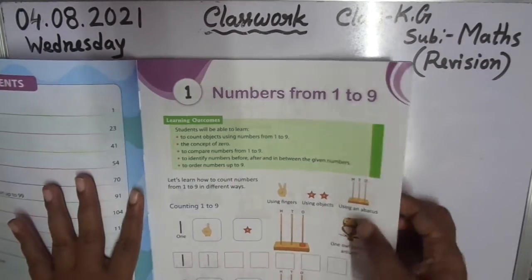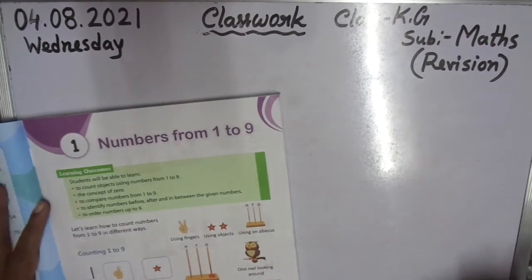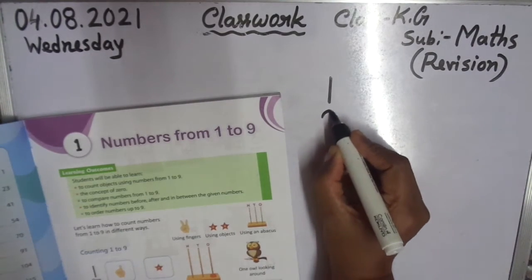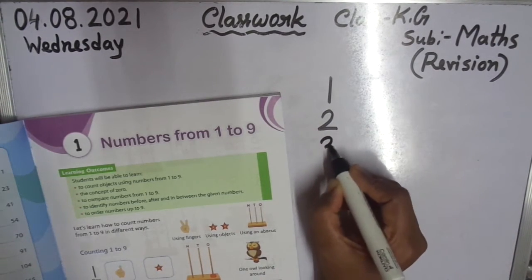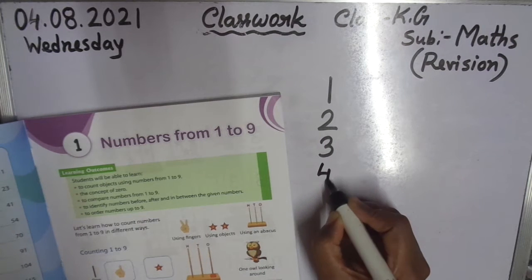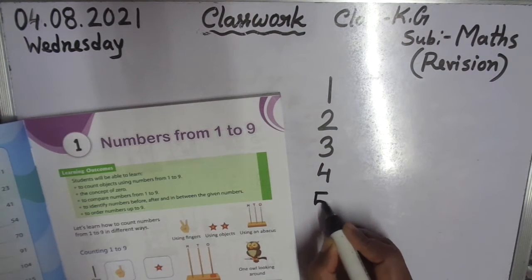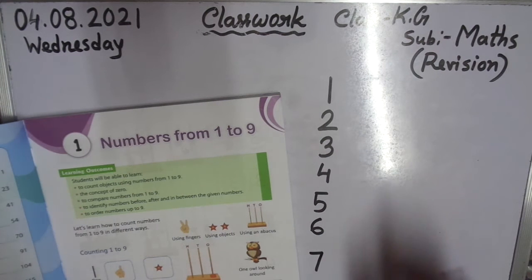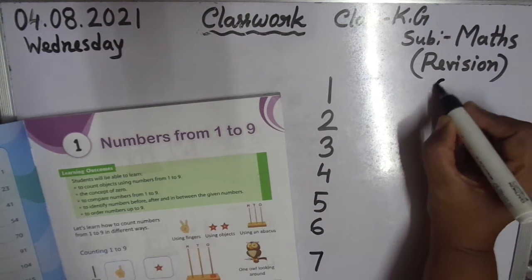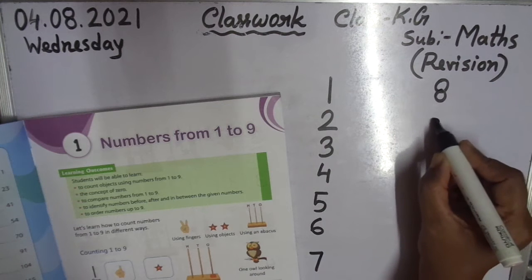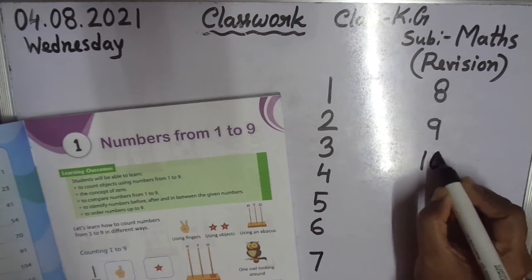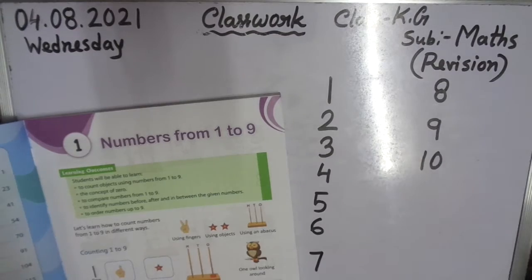You practice first numbers. Means 1, 2, 3, 4, 5, 6, 7, 8, 9, 10. So 1 to 9.